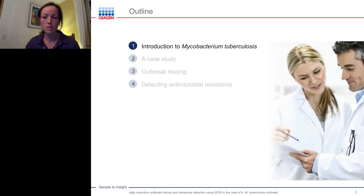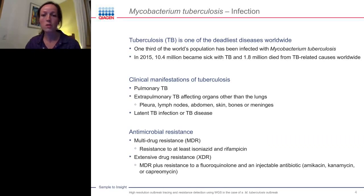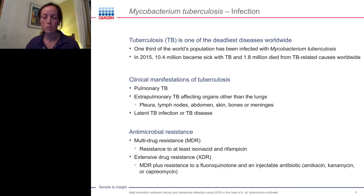Tuberculosis is one of the deadliest diseases worldwide. One-third of the world's population has been estimated to be infected with Mycobacterium tuberculosis. According to the World Health Organization and the CDC, 10.4 million people became sick with TB, and there were 1.8 million TB-related deaths in 2015. There are two types of clinical manifestations: pulmonary TB affecting the lungs, and extra-pulmonary TB affecting other organs. Not everyone infected with TB becomes sick — TB can remain latent for a lifetime, whereas in others, especially those with a weakened immune system, TB disease will develop.